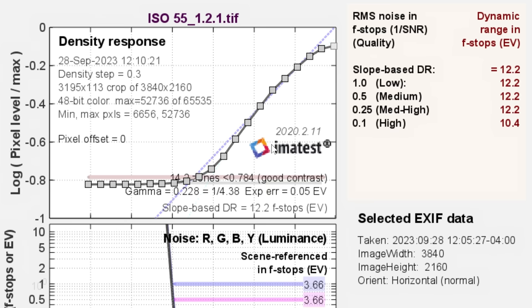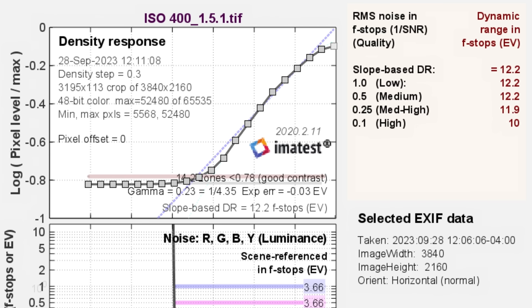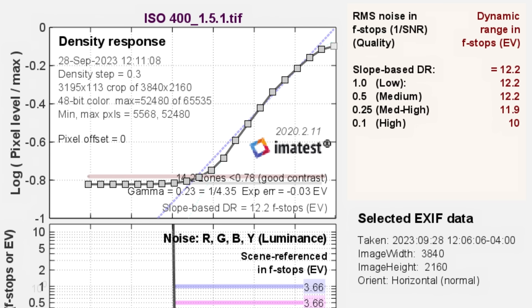And this pattern carried on even as we moved up. This is ISO 100 now. Same thing: 12.2, 12.2, 12.2, all the way down. And ISO 200, pretty similar result. This could be that margin of error where we're trying to get the shutter speed just right. But again, you get all 12s here, and then a low 10 on the high. And 400, pretty much the same.